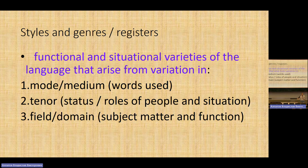Register is the functional and situational variety of language that arises from variation in context. If you look into specialist literature, you will see different definitions of style. Some argue register is better than style. What is enough for us is to know that there are such terms as style, register, and genre. Genre is narrower than style, but all of these are functional and situational varieties of language that arise from variation in several factors.